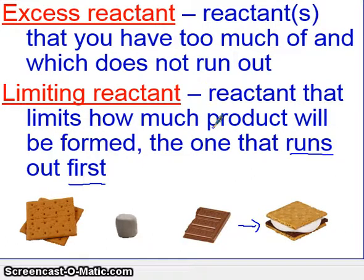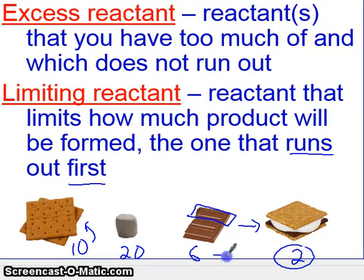So the idea here is, think if we had 10 pieces of graham crackers, 20 pieces of marshmallows, and only 6 pieces of chocolate. What happens is, and we'll assume that this is one piece of chocolate, from these ingredients we can only form two s'mores because the chocolate limits us. So chocolate will be the limiting reactant, and then the graham crackers and the marshmallows will all be excess reactants.